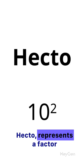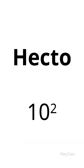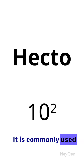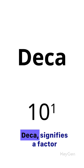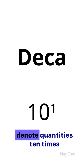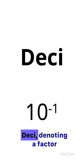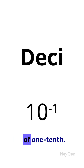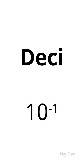Hecto represents a factor of 100 in the metric system. It is commonly used in measurements like hectares for land area. Deca signifies a factor of 10, used to denote quantities 10 times larger than the base unit. Deci denotes a factor of one-tenth, commonly used in measurements like decimeters.